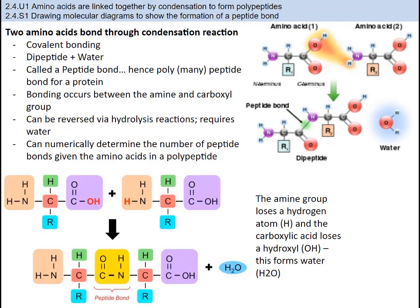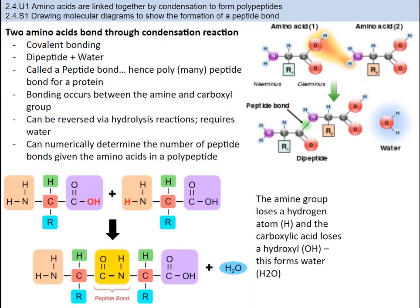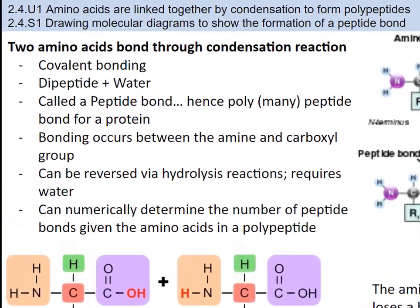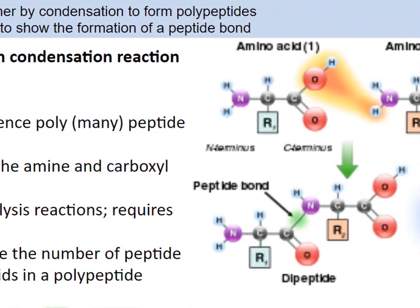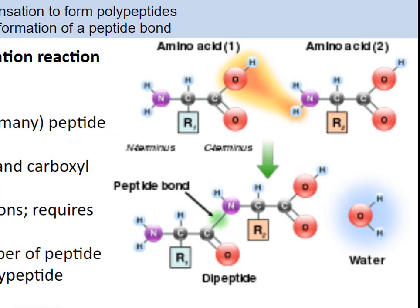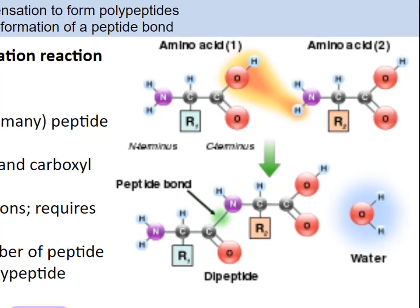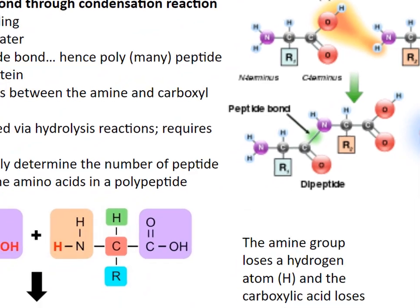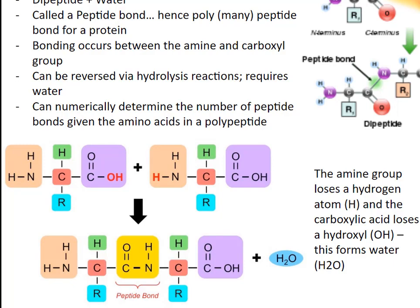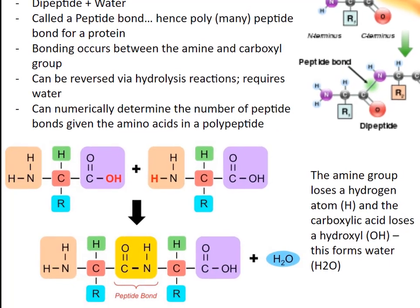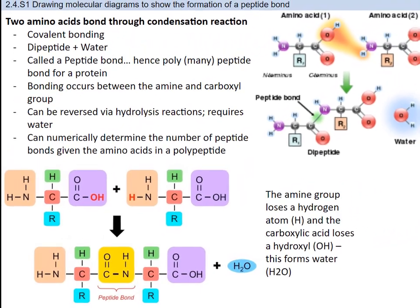I've already mentioned the structure of amino acids and how amino acids are held together, but let's take a closer look. Two amino acids bond in a covalent bond through a chemical reaction known as a condensation reaction. The condensation reaction involves the amine group (NH2) of one amino acid and the carboxyl group (COOH) of another. The amine group loses a hydrogen, and the carboxylic acid group loses a hydroxyl group (OH). This leaves two H's and an O, better known as H2O. Water is removed, just like in all condensation reactions, and a new bond is formed between the two amino acids called a peptide bond. One skill you need to know is how to draw the molecular diagrams to show the formation of a peptide bond.